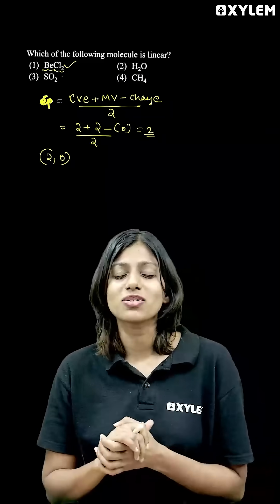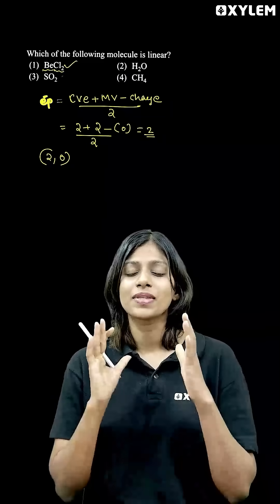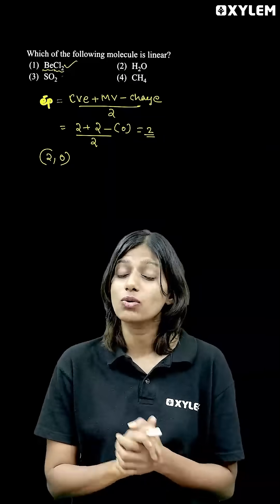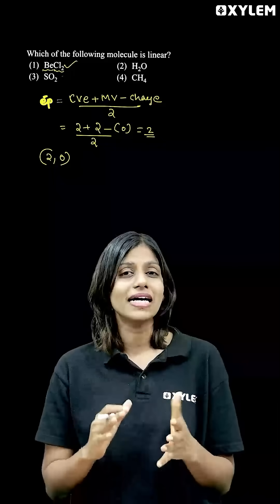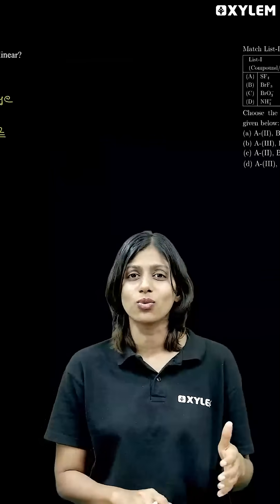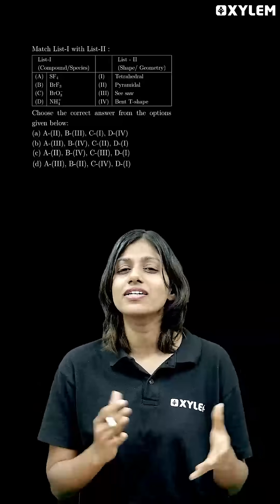You can check all the options using this. Select the electron pairs using the formula: central atom valence electrons plus surrounding monovalent atom minus charge, divided by 2. And now, try yourself. Here is a question for you.